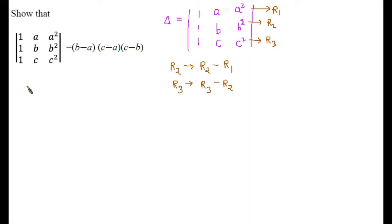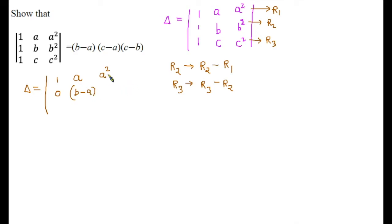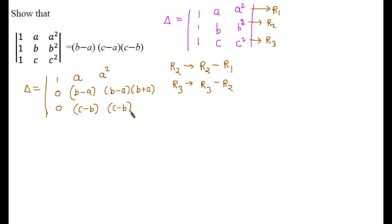Let's apply these manipulations. The first row remains the same: (1, a, a²). The second row R2 minus R1 gives: 0, (b minus a), and (b² minus a²), which equals (b plus a)(b minus a). Then R3 minus R2 gives: 0, (c minus b), and (c² minus b²), which equals (c minus b) into (c plus b).